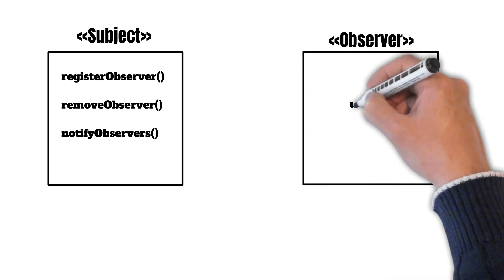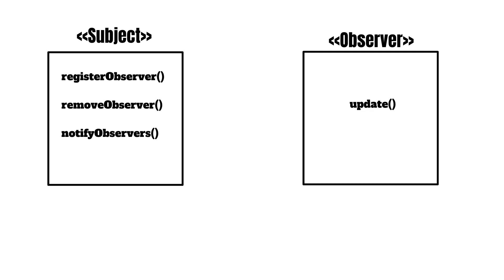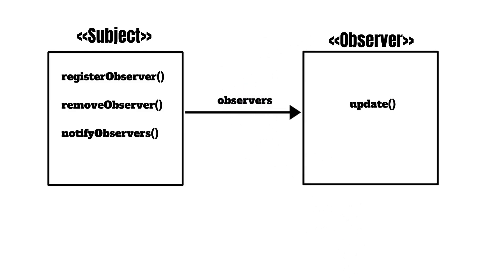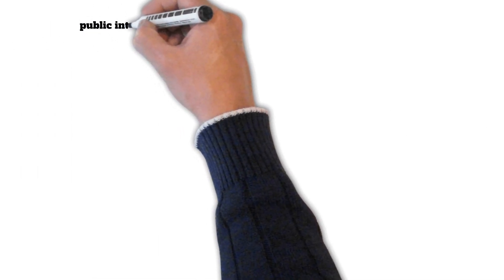We also have an update method in the observer interface, which gets called by the notifyObserver method. The changed or updated state is passed to the list of observers — for each observer the update method is called and the updated values of the state are passed, so as to send the updated state of the object to each and every observer.